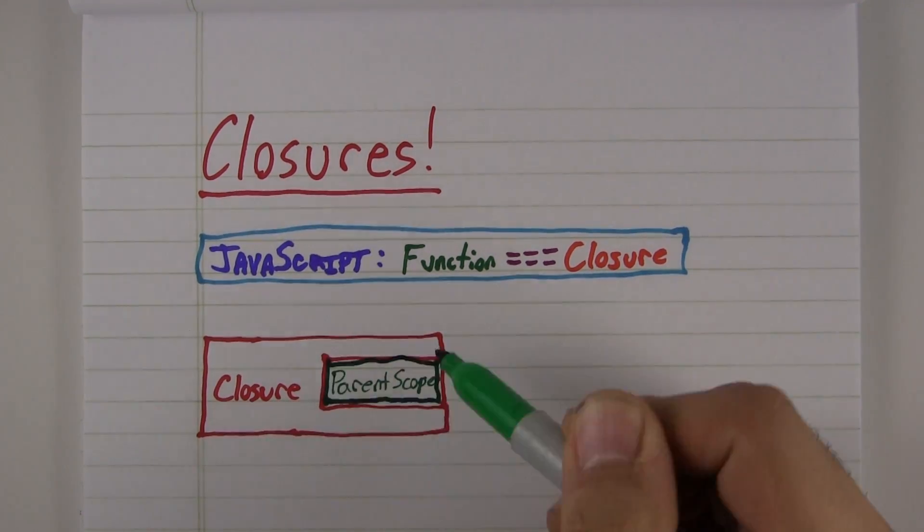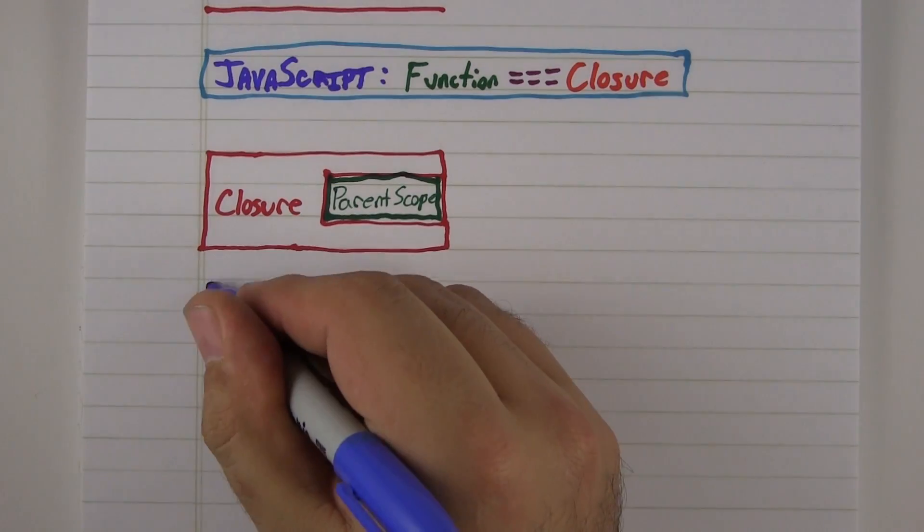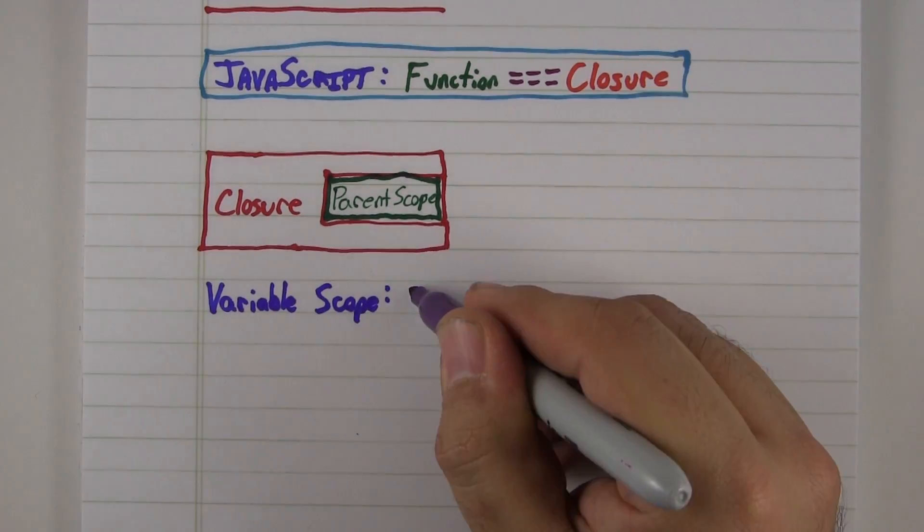To understand what that means, we first need to talk about variable scope. Let's look at a different language first, PHP.